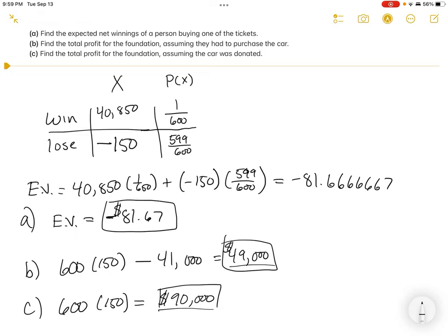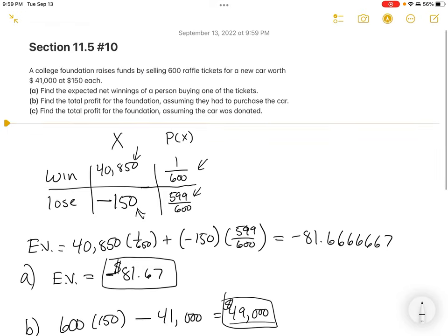So for expected value problems, make sure you have the profit and loss. Make sure you have the right probabilities - those are either given to you or you figure them out based on the setting. Here we knew there was a 1 in 600 chance of winning or 599 out of 600 of losing. If you have questions, reach out via email or come by those Zoom sessions.